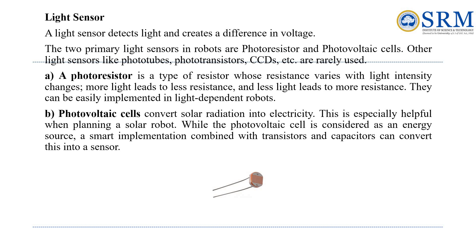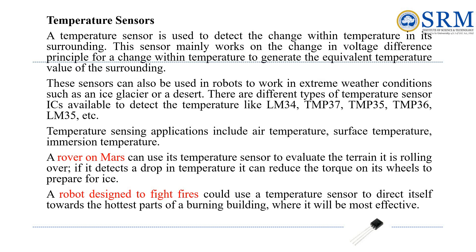Photo resistors change their resistance with varying light levels, making them great for light-sensitive robots. Photovoltaic cells turn sunlight into electricity, which is handy for solar-powered robots — with some clever circuitry these cells can also function as sensors. Other light sensors like photo tubes and photo transistors are used less often.